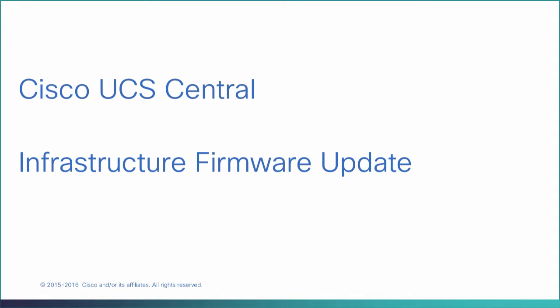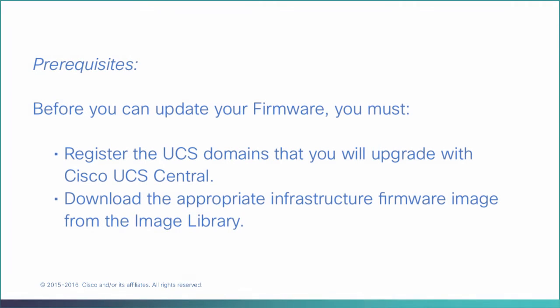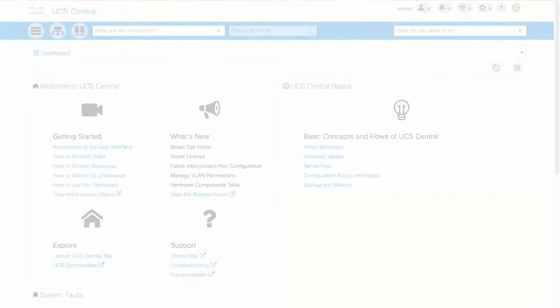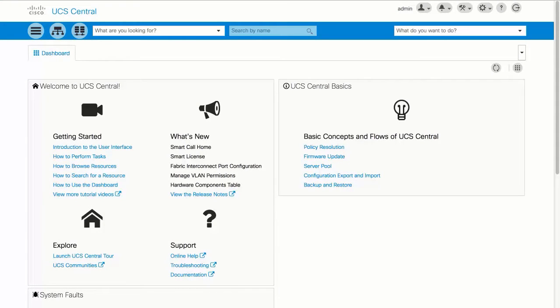Cisco UCS Central Infrastructure Firmware Update. Before you can update your firmware, you must register the UCS domains that you will upgrade with Cisco UCS Central and download the appropriate infrastructure firmware image from the image library. Ensure the infrastructure and catalog firmware policy is set to global.